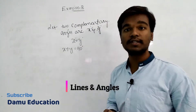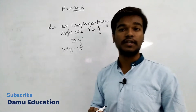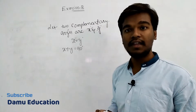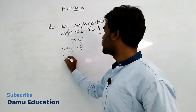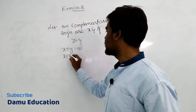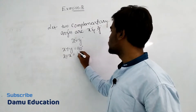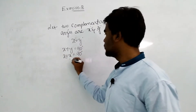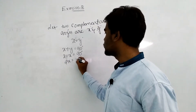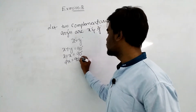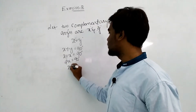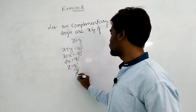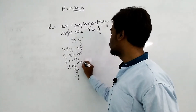Here x is equals to y, so we substitute y with x. So x plus x equals 90 degrees, and 2x equals 90 degrees, then x equals 90 divided by 2, so x equals 45 degrees.